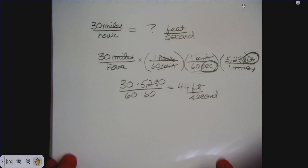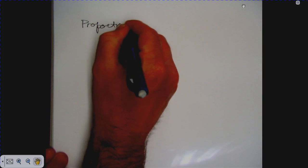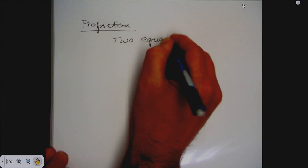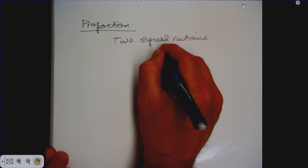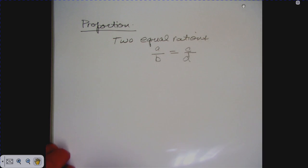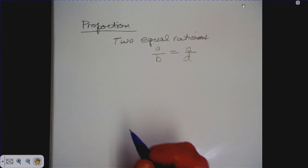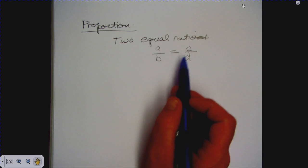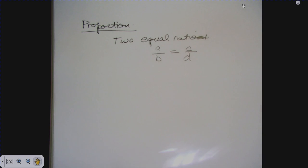This section also deals with proportions, which you know from pre-algebra. A proportion is simply two equal ratios. For example, a over b equals c over d is a proportion. One way to read this is 'a is to b as c is to d' — similar to the analogies you see on standardized tests.